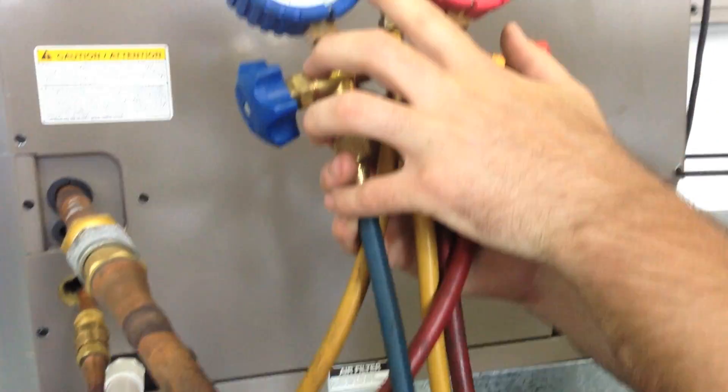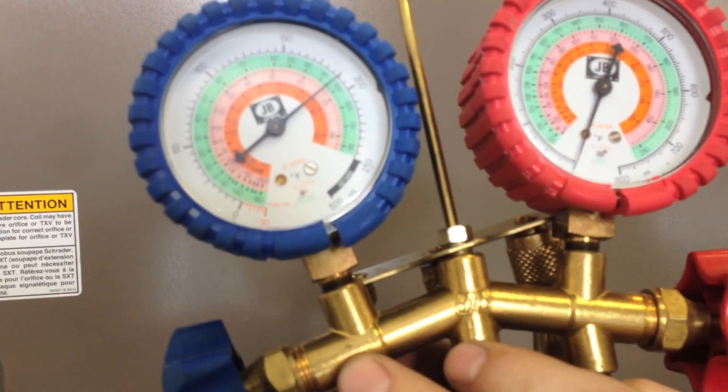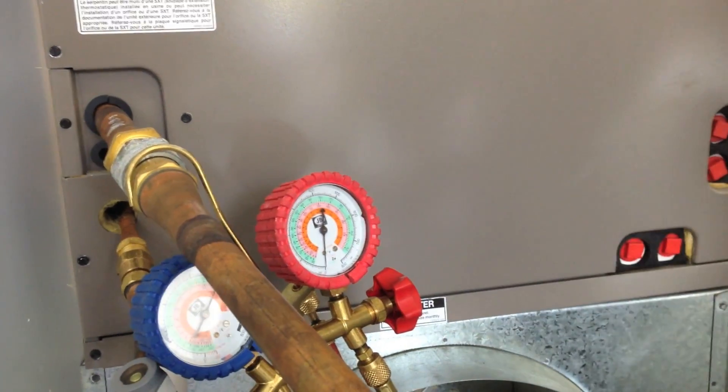We notice our pressure is quite high. That's okay, the system is off. We can hang our gauge set for a second and go and turn our system on.